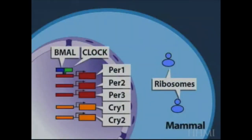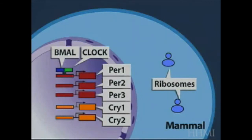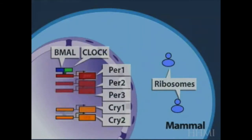Here, the molecular interactions involved in the negative feedback loop responsible for circadian rhythms in mammals are shown. Mammalian SCN neurons contain three types of period genes — PER1, PER2, and PER3 — and two types of cryptochrome genes, CRY1 and CRY2. PER and CRY genes in the nucleus are activated by the binding of proteins BMAL1 and CLOCK, which are positive activators, to their promoters.